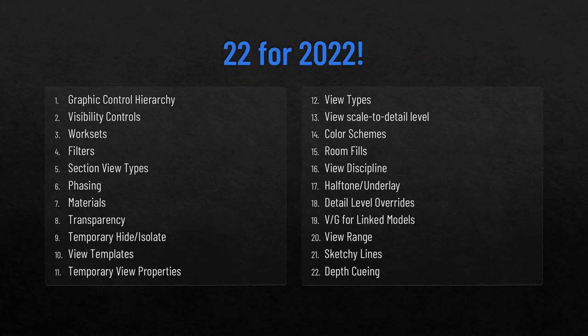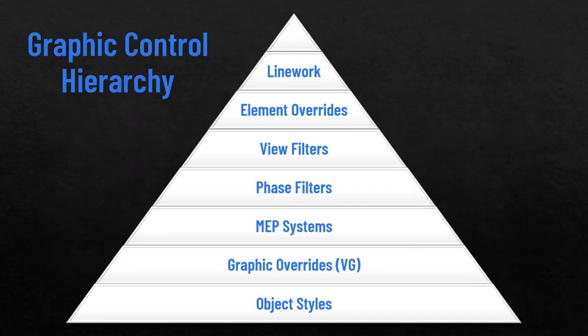It boils down to people not having a solid plan for how to handle visibility and graphics in their models and views. So we're going to dig into 22 specific things. The first six or seven could probably yield about 50 things on their own, then we get very specific. This is going to be pretty fast-paced, but the good news is it's being recorded, so if you miss something you can come back and watch.